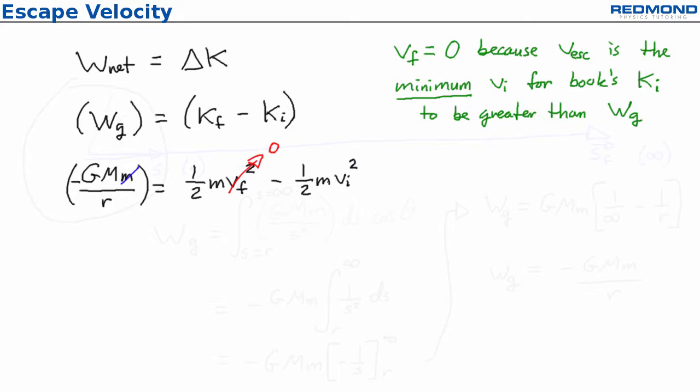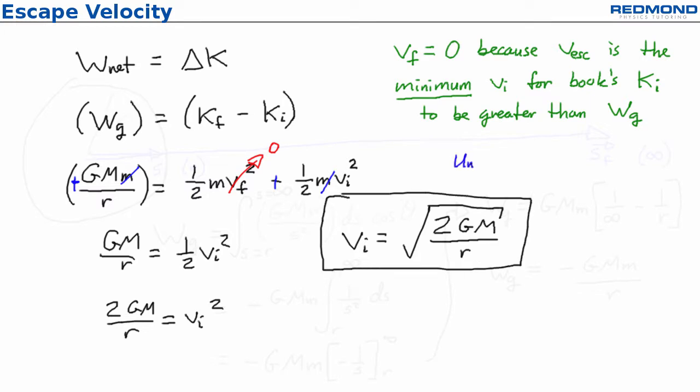The book's mass cancels out, as do the negative signs on both sides, so I just multiply by 2 and then take the square root to find that V initial is the square root of 2GM over R. So the escape velocity depends on the universal gravitational constant, the mass of whichever massive object, planet you're escaping from, and the distance to that object's center.